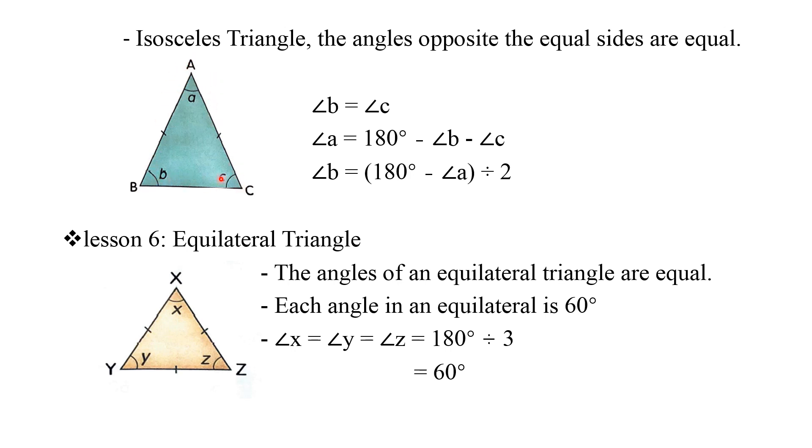So it makes angle B and angle C equal. To find angle B and angle C, if you want to know angle B, when you know angle B, the same as you know angle C. You just take 180 degrees minus angle A and then divide by 2.